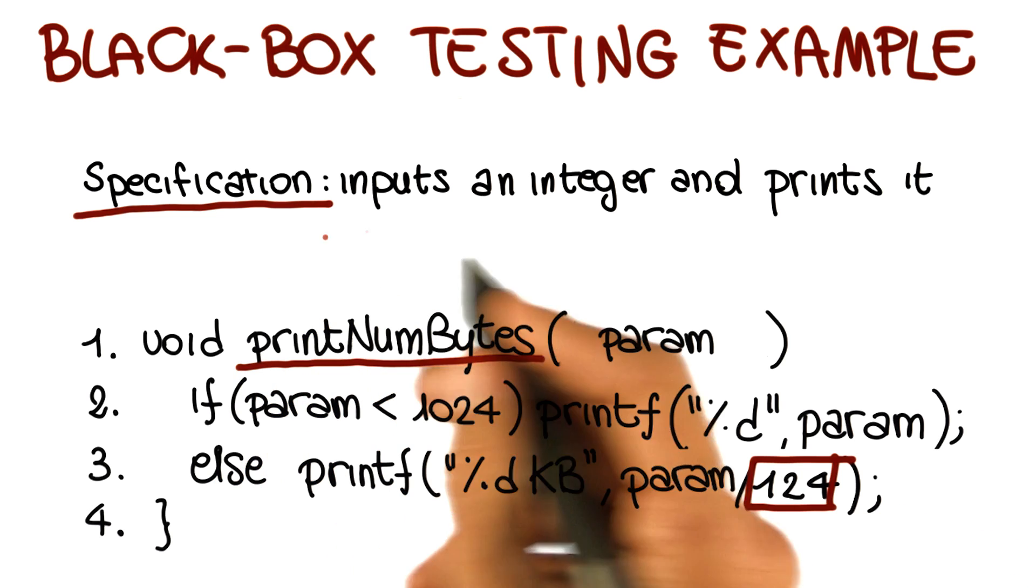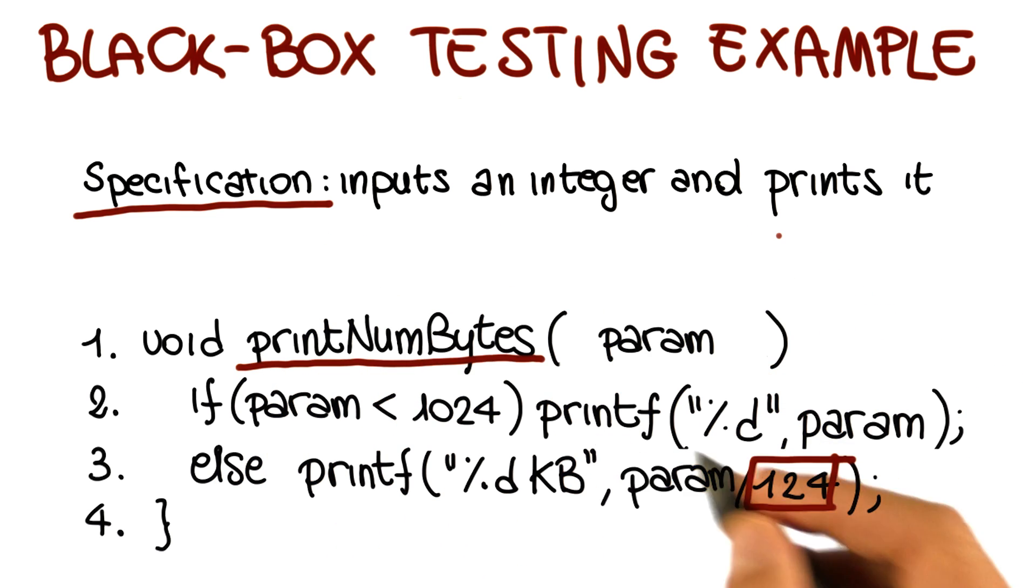So this is a case in which by simply doing black box testing, so by simply looking at the specification, we might miss this problem, because we have no reason to consider numbers that are less than 1024 or greater than 1024.